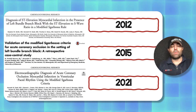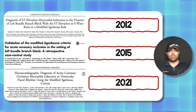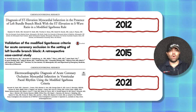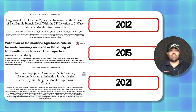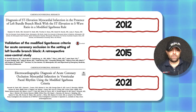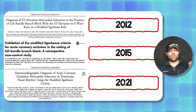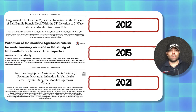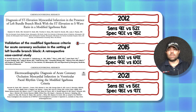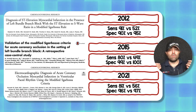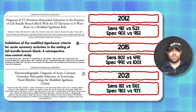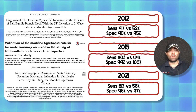The evidence for this comes primarily from three papers. The original paper was published in 2012. The follow-up validation study for left bundle branch block was published in 2015 — the speaker was actually one of the authors on that paper. And in 2021, the modified Sgarbossa criteria were also applied to paced rhythms. The takeaway from all three studies is that the sensitivity of the modified Sgarbossa criteria is significantly greater than the original, with a very similar specificity — making it simply a better rule to apply.